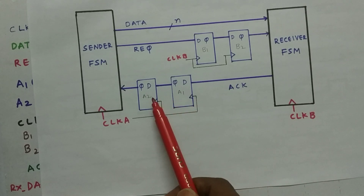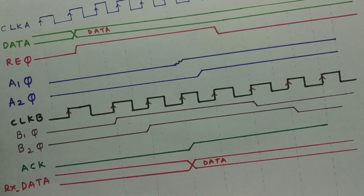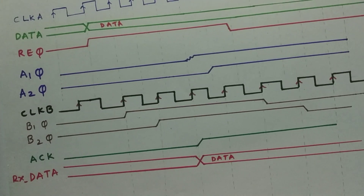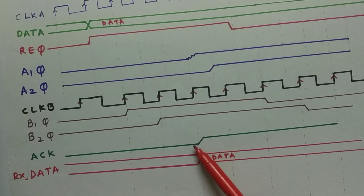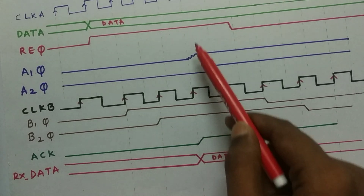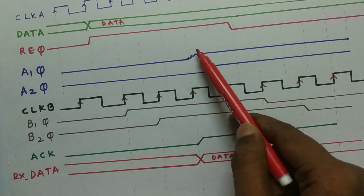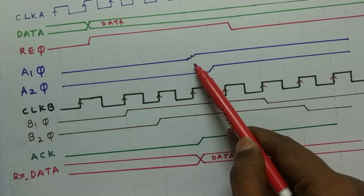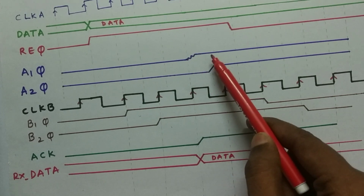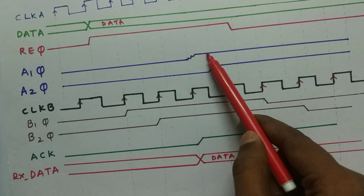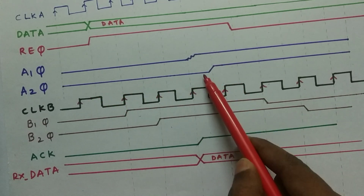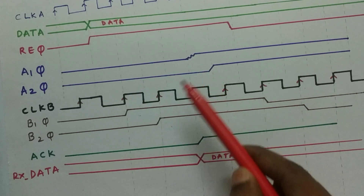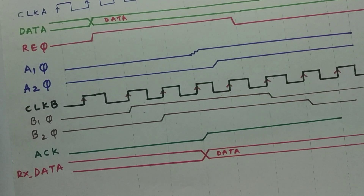Looking at A1Q and A2Q outputs — one important point is that the ACK signal is changing near its setup time, so there will be a small metastability. We expect it to resolve and go to a stable high after a certain amount of time. As a result, A2Q goes high. When A2Q is seen by the sender FSM, it knows it can change the data.